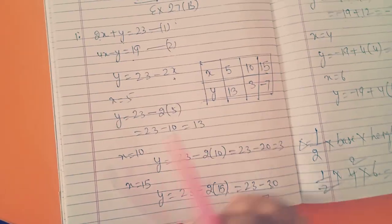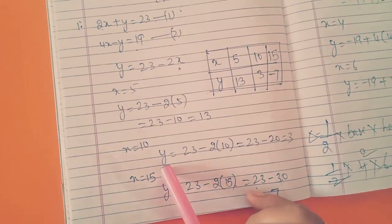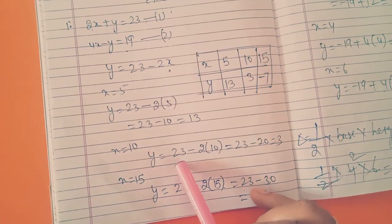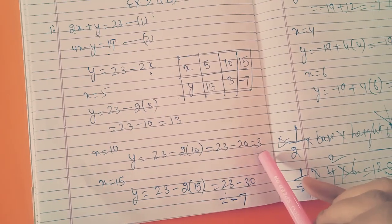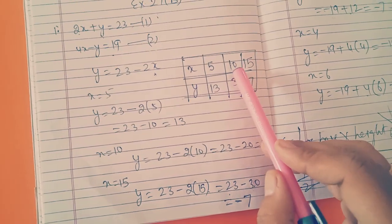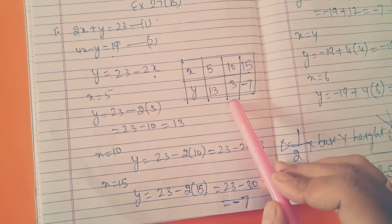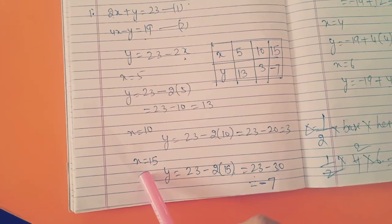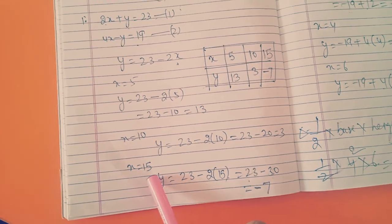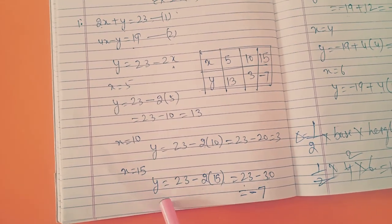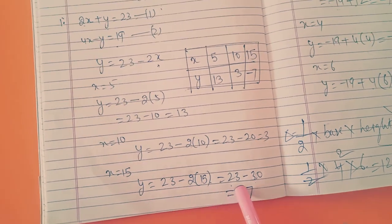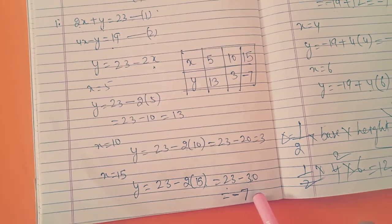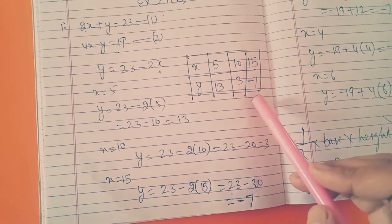Next, x is equal to 10. Then y will be equal to 23 minus 2 into 10, so 23 minus 20 is equal to 3. So here I will write 10 and y is 3. Then again I will put x is equal to 15. Then y is equal to 23 minus 2 into 15, 23 minus 30 is equal to minus 7.